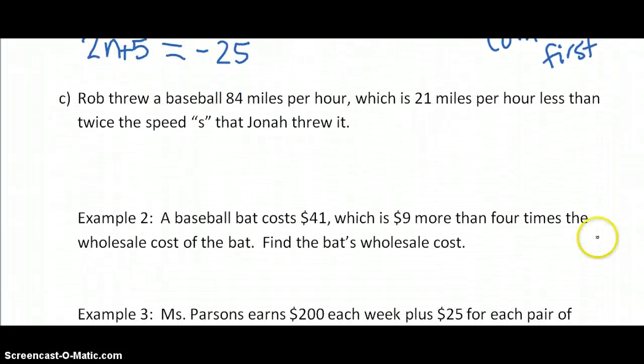Rob threw a baseball 84 miles per hour, which is 21 miles per hour less than twice the speed S that Jonah threw. The speed S that Jonah threw it. Okay, so S stands for Jonah's speed.